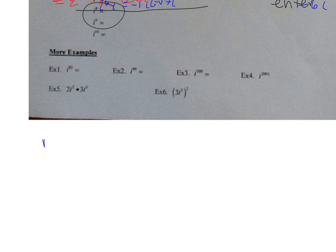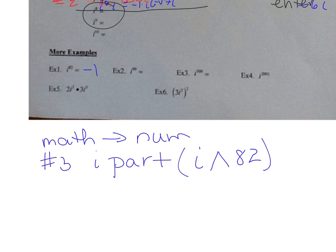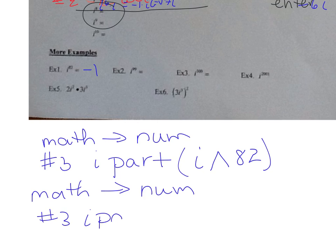Let's try i to the 82. Press math, go over to NUM, select number three which is iPart. It'll come up on your screen. Type in i, then the carrot key, then 82, and hit enter. You get negative 1. Now let's do i to the 99: math, go over to NUM, number three iPart, type i, carrot key 99, and you get negative i.